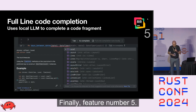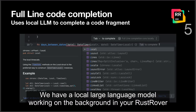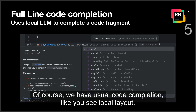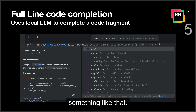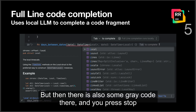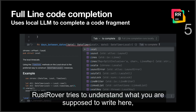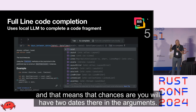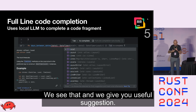Feature number five: we have a local large language model working in the background in RustRover, trying to complete code fragments. Of course, we have usual code completion, but there is also gray code that you press Tab to complete the full line. RustRover tries to understand what you are supposed to write — for example, if the function name is 'days_between_dates', that means chances are you will have two dates in the arguments, and we give you a useful suggestion.